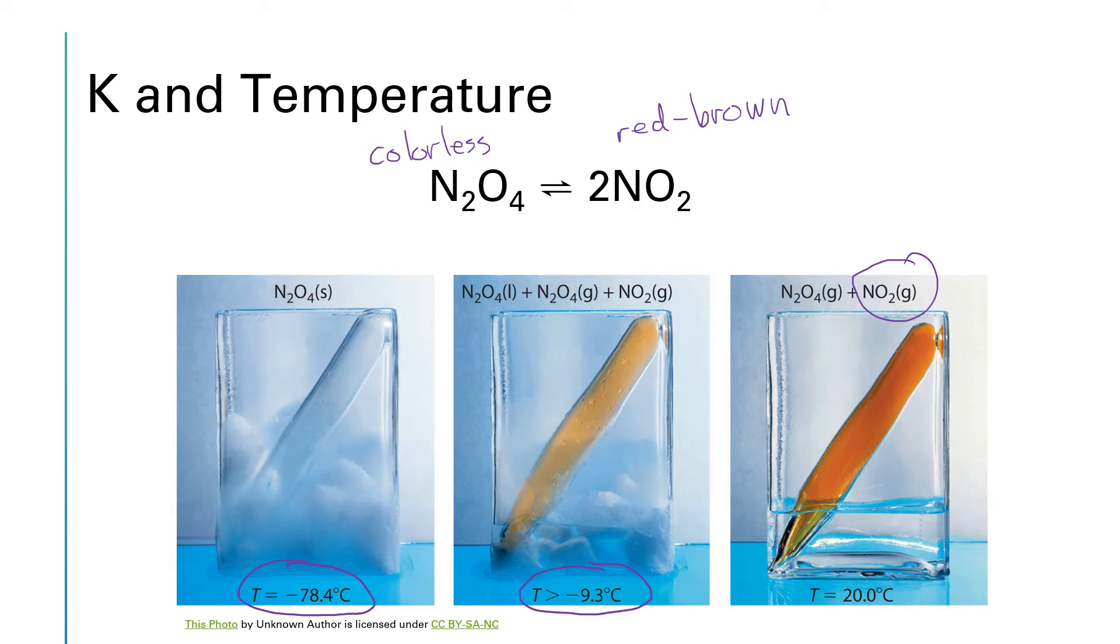So as we get more NO2, if we think about our equilibrium constant expression NO2 squared over N2O4, the presence of more NO2 means that the numerator of this expression is bigger, which means the value for K will be bigger. So for this particular reaction, as the temperature goes up, the numerical value of K goes up.